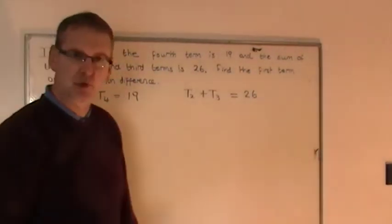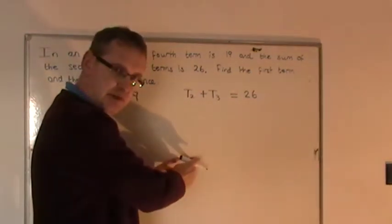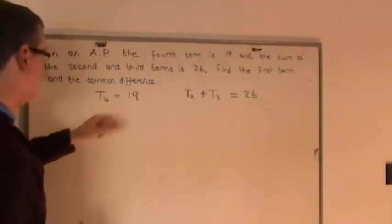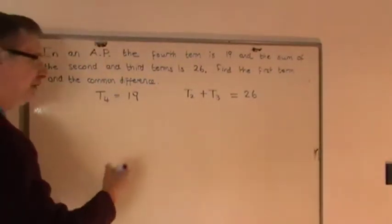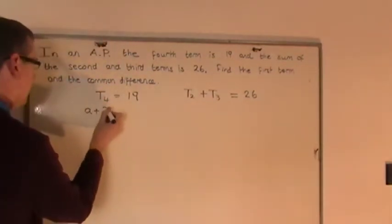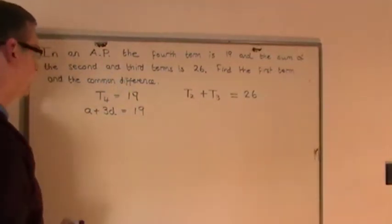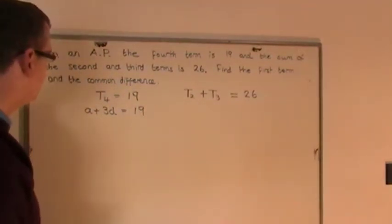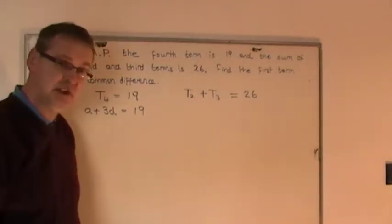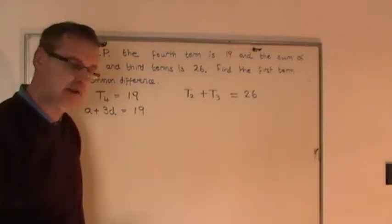So those are the two statements which will now, theoretically I expect, give rise to two simultaneous equations. So T4 on the left hand side. Well, from previous examples, hopefully by now you'll realize that T4 can be written as A plus 3D, and that will be equal to 19. So it's A plus N minus 1 D, so if N is 4 you get A plus 3D. That's equation 1, there are two unknowns, I can't solve it.